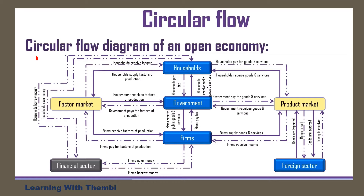Therefore, firms or the government will pay for those factors of production, and when they pay for factors of production, it's a payment and that becomes a money flow. So money flow and real flows are flowing in opposite directions. Money flows are represented by dotted lines in this circular flow model, and real flows are represented by solid lines.